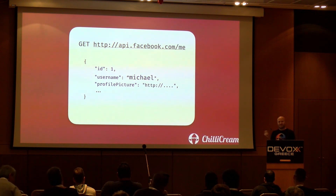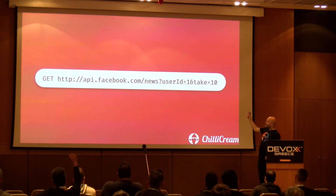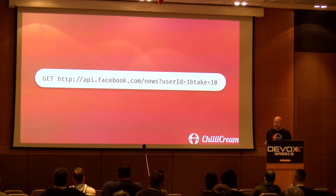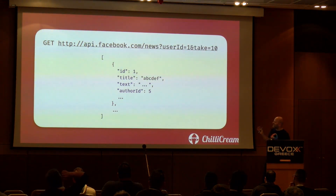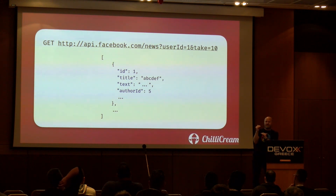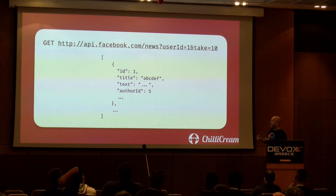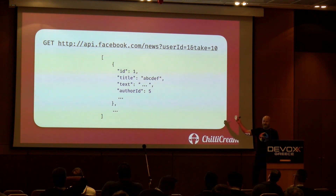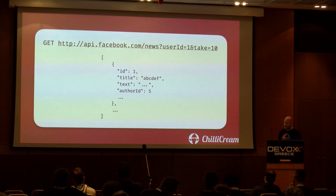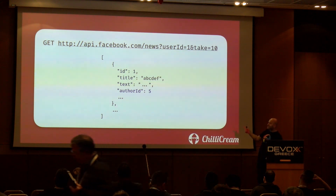It's not just the three properties — to show the newsfeed they'd make another call, passing in the ID fetched initially, and ask for the newsfeed. That API was also designed for the web and would return around 50–60 properties, while mobile only needed a few. The newsfeed response contained author IDs and news story IDs, so they still weren't done.